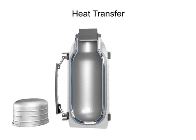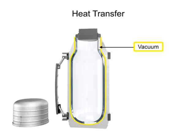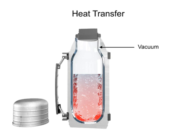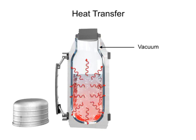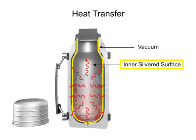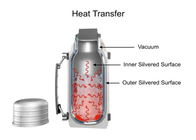In between the silvered glass walls of a thermos lies a vacuum. In the case of a hot liquid, heat transfer by convection through the vacuum is greatly restricted due to the absence of air molecules necessary to facilitate the transfer of heat. The lack of physical contact between the inside and outside walls of the thermos due to this airless space also greatly inhibits the movement of heat by conduction. Heat loss by radiation is prevented by the silvered walls reflecting radiant energy back into the thermos.